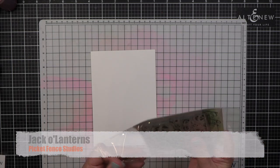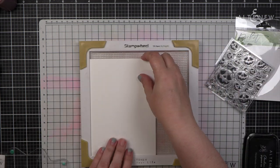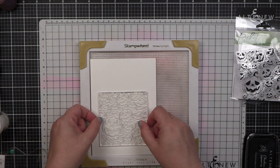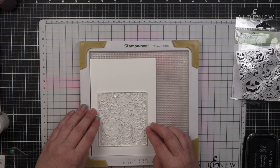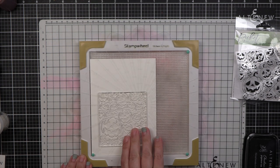I'm starting off with an alcohol inked background using the Picket Fence Jack-o'-lanterns stamp. I am putting this stamp on a piece of Yupo paper, and Yupo paper is a plastic paper, not really paper per se.